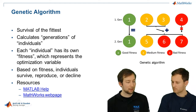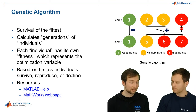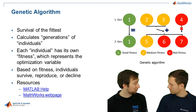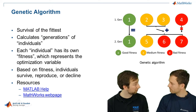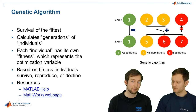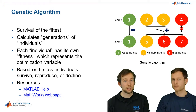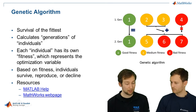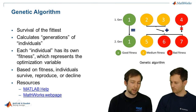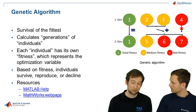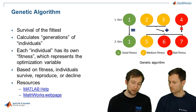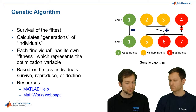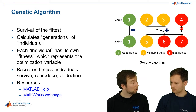The genetic algorithm is based on survival of the fittest. It calculates so-called generations of individuals. Each individual has every input parameter with a specific value. Then you calculate a fitness function, and this fitness function determines if you survive, reproduce, or decline. On the right you can see a small picture — green is for good fitness, yellow for okay, and red for bad fitness. As you can see, out of the first generation number four declines — it is not fit enough. Two and three might reproduce, while others drop out.